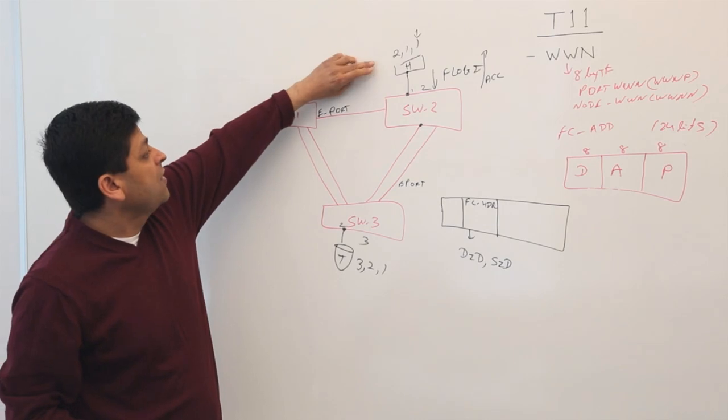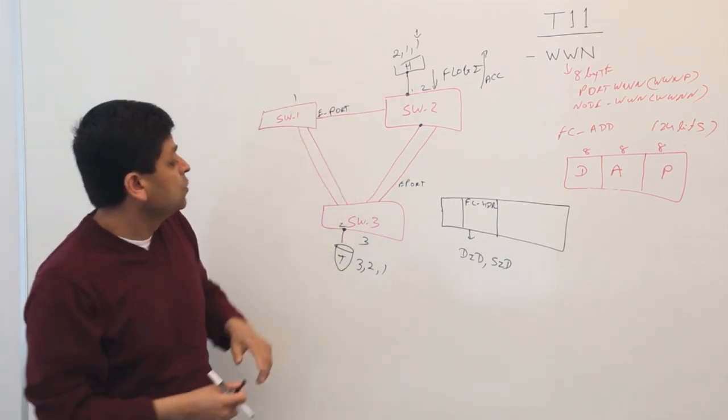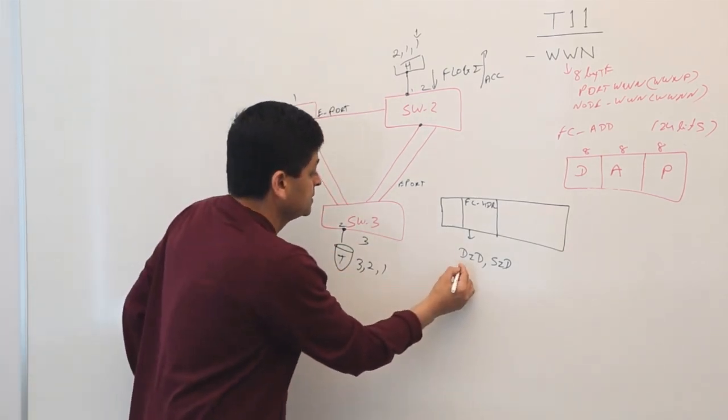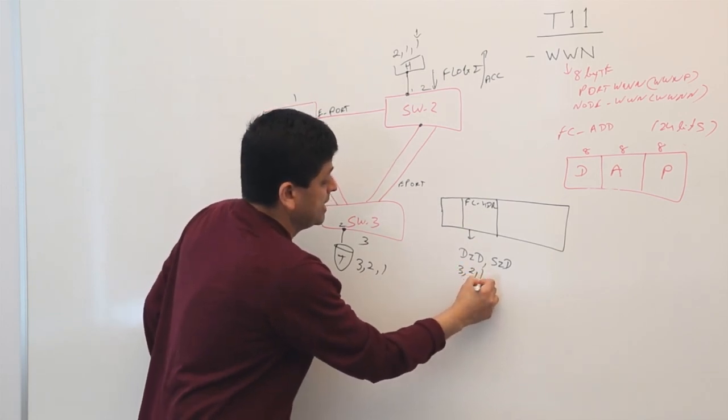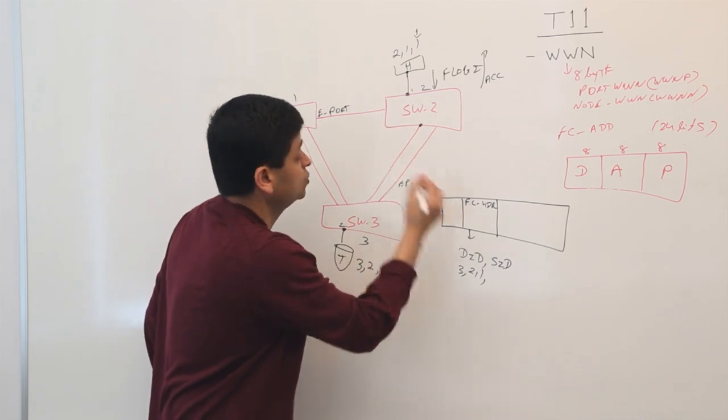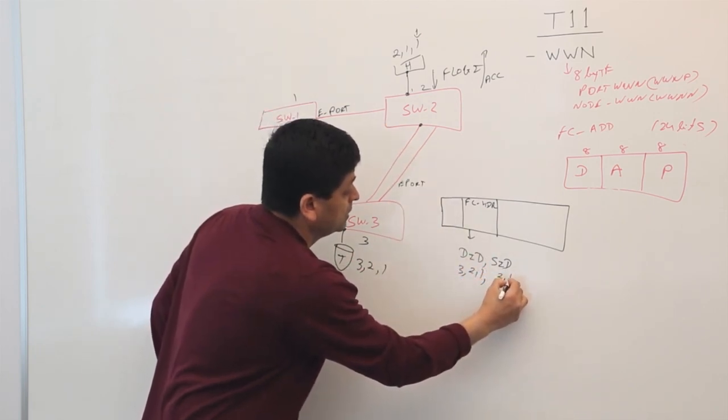If I want to have frames go from here to here, this host will embed saying DID I want 3-2-1. And the source here saying who sent it, 2-1-1.